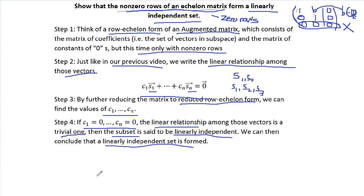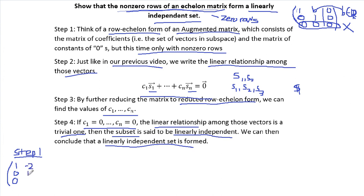So let's start with step one. We will think of an augmented matrix. Here is one: the matrix has entries 1, 1, 0, 0, -2, 1, 0, 1, -1, 1, 1, 2 — and the constant matrix is all zeros: 0, 0, 0.